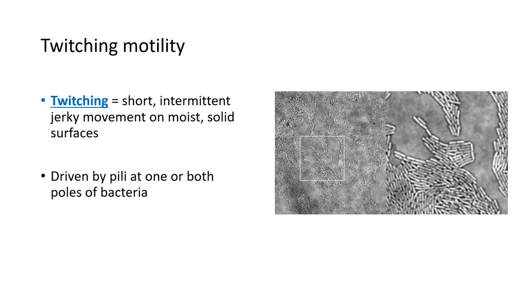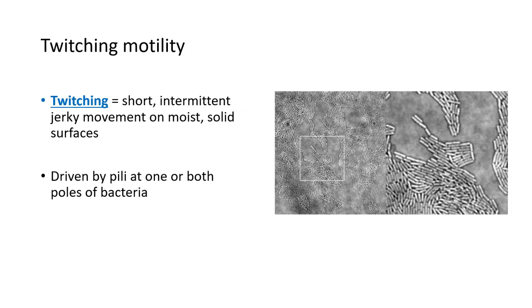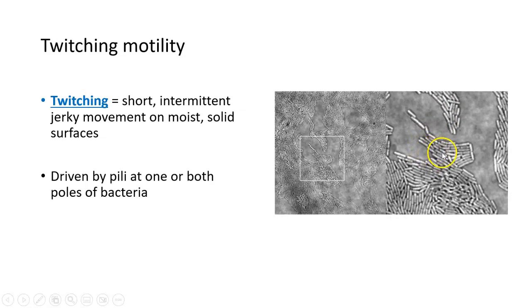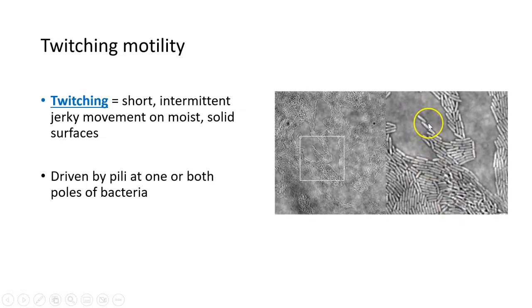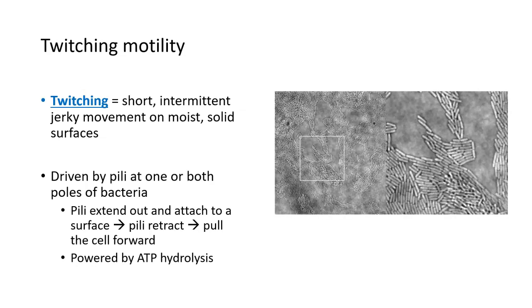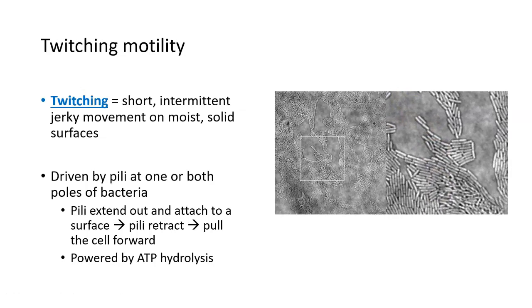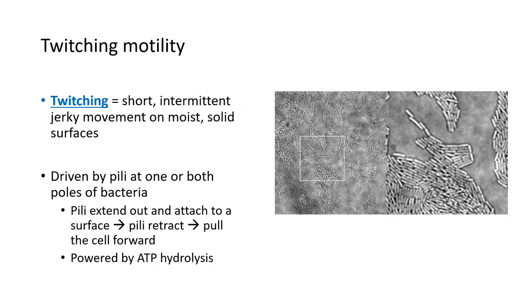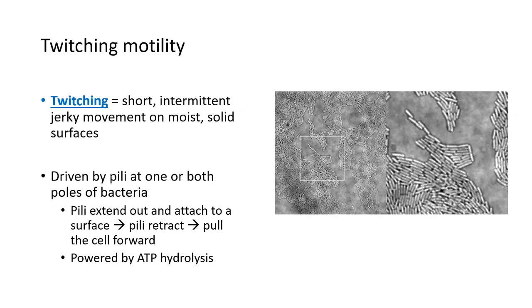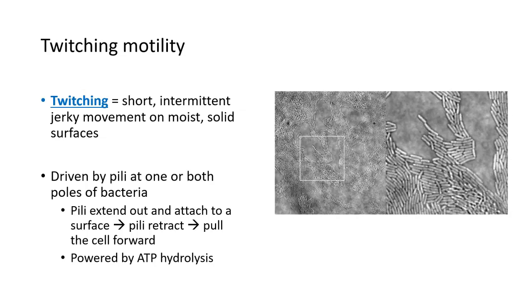There are also movements driven by pili or fimbria. One type of motility not dependent on flagella but on pili is called twitching — a short, jerky movement that occurs on solid surfaces. Pili at the poles of a bacterial cell extend outward, grab onto a surface, and then retract into the bacterial cell, pulling the cell forward a little bit at a time. This whole process is dependent on energy that comes from the hydrolysis of ATP.